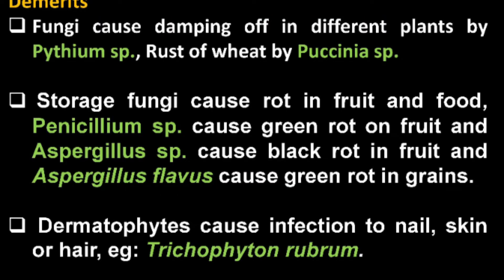Next, we will see the negative effects of fungi. Fungi cause damping off in different plants — example: Pythium species. Another example is rust of wheat caused by Puccinia species. Food spoilage and fruit rot are reported because of Penicillium species and Aspergillus species. Dermatophytes cause infection in nails, skin, or hair — example: Trichophyton rubrum.